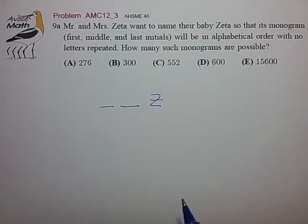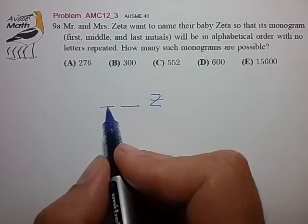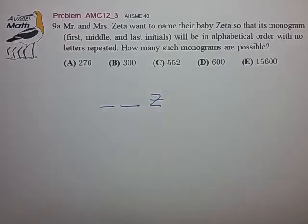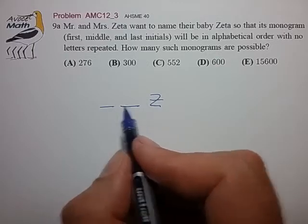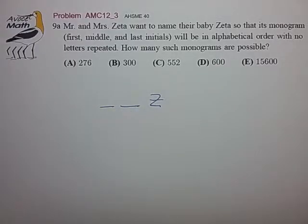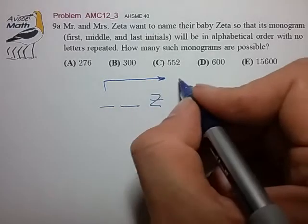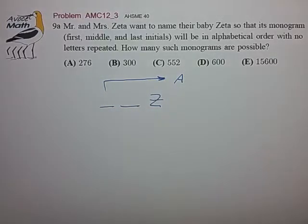In the brute force method, we're going to tabulate the various choices depending on our choice of the first letter. What we notice is that depending on how we choose the first letter, the number of available choices for the second letter varies. So we're going to break this up into different cases depending on the choice of the first letter.